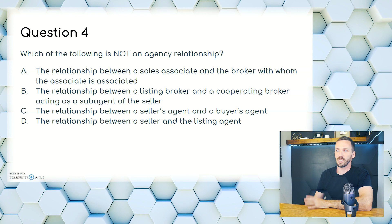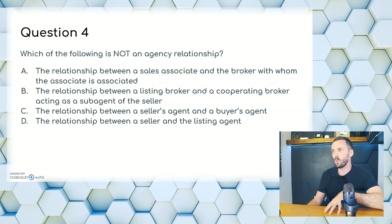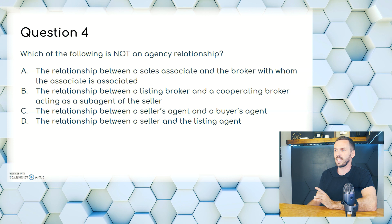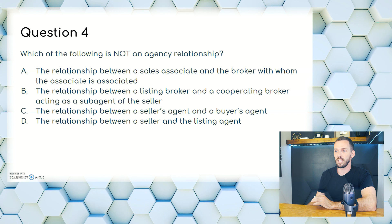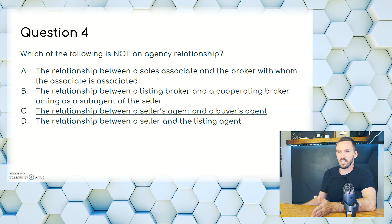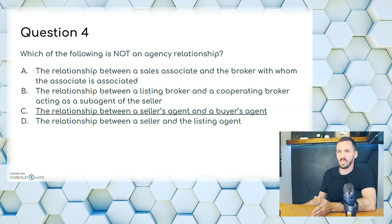Question 4. Which of the following is not an agency relationship? A, the relationship between a sales associate and the broker; B, the relationship between a listing broker and a cooperating broker acting as a sub-agent of the seller; C, the relationship between a seller's agent and a buyer's agent; or D, the relationship between a seller and the listing agent. Two agents working on both ends of a deal are not an agency relationship. The answer is C.